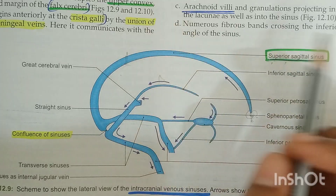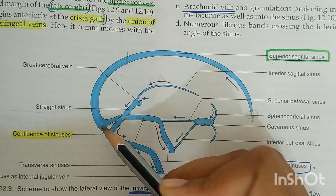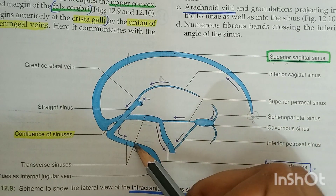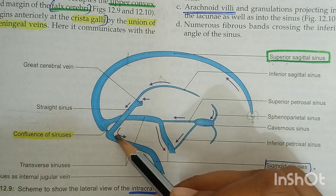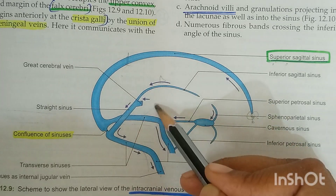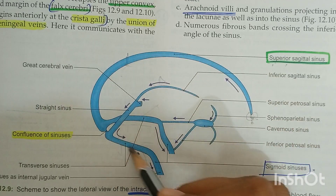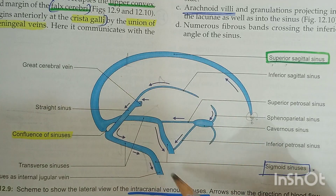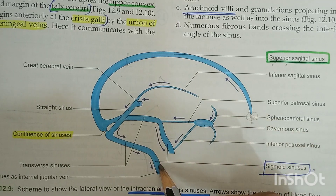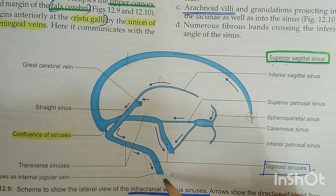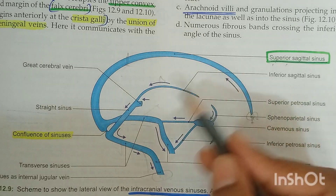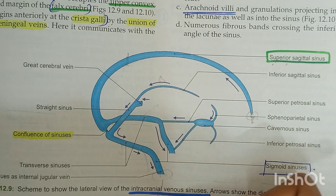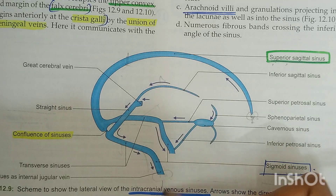On reaching the internal occipital protuberance it usually deviates to the right side and continues as the right transverse sinus. This is the right transverse sinus and this is the left transverse sinus. It continues with the right transverse sinus and further continues with the right sigmoid sinus, after which it leaves the skull through the jugular foramen.